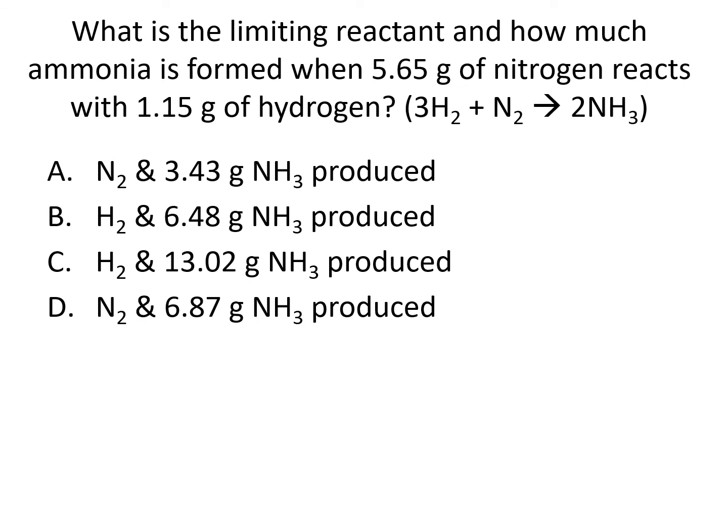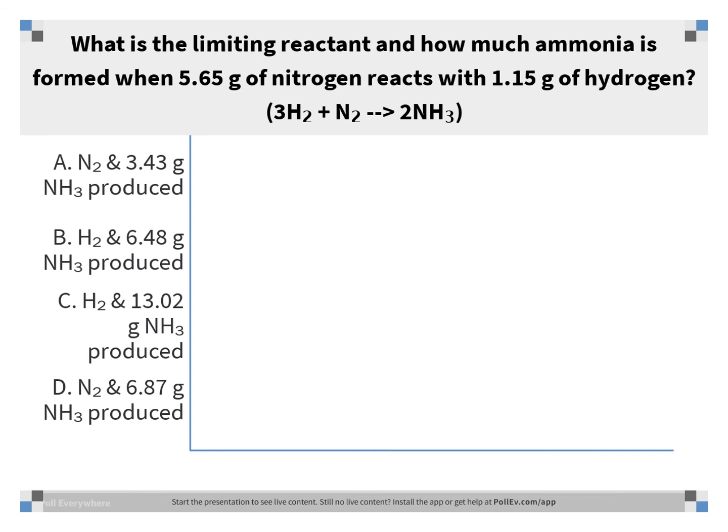Which is the limiting reactant and how much ammonia is formed when 5.65 grams of nitrogen reacts with 1.15 grams of hydrogen? The balanced equation is: N2 + 3H2 → 2NH3. Remember, you can't go from grams to grams directly — you have to go through moles. You're going to have to do it for both reactants and find out how much product can form. The correct answer is B: hydrogen is the limiting reactant and 6.48 grams of ammonia are produced.